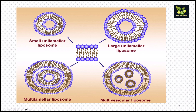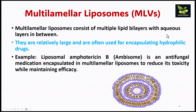In the structural diagram, you can see small unilamellar, large unilamellar, multilamellar, and multivesicular (with inside vesicles present). Multilamellar liposomes consist of multiple lipid bilayers, are relatively larger, and very importantly they are often used for encapsulating hydrophilic (water-soluble) drugs in the central aqueous core. For example, liposomal amphotericin B — marketed as AmBisome — is an antifungal medication encapsulated in multilamellar liposomes to reduce toxicity while maintaining efficacy.